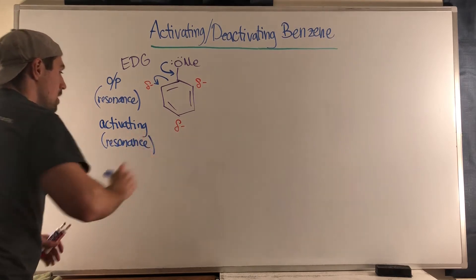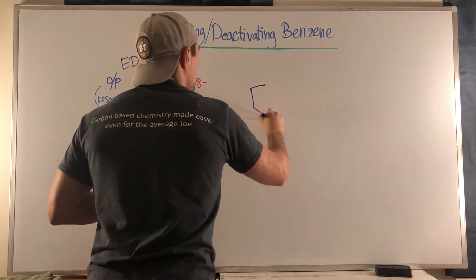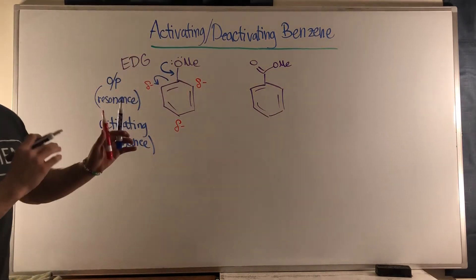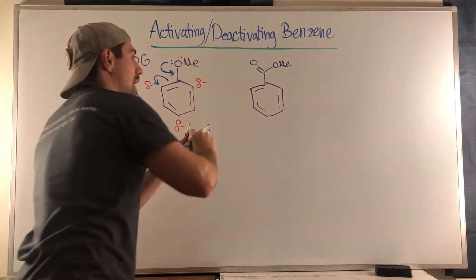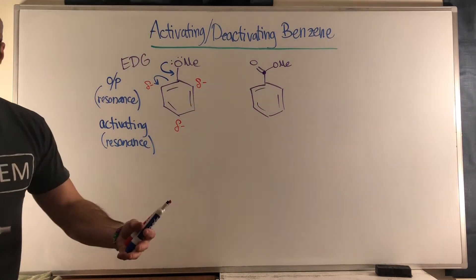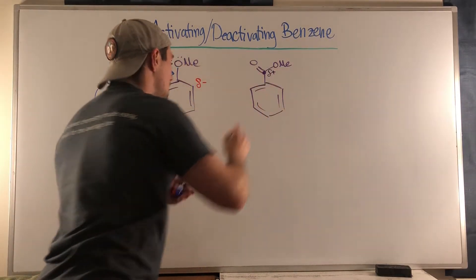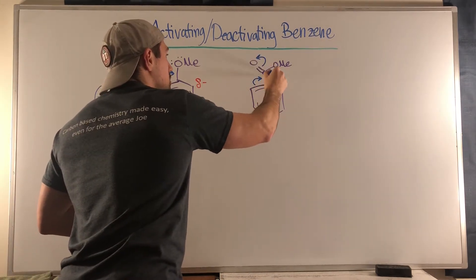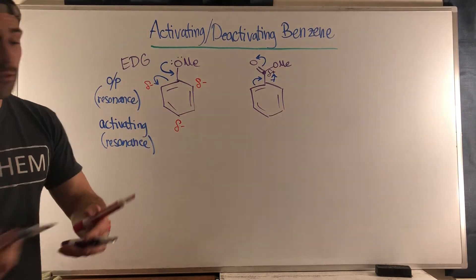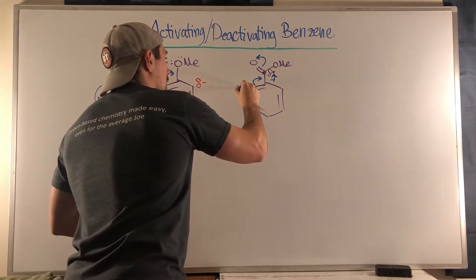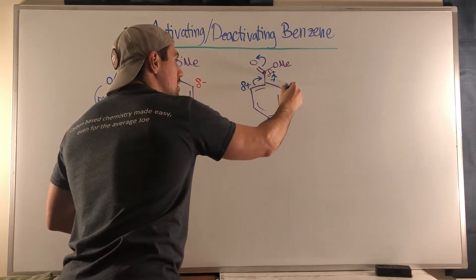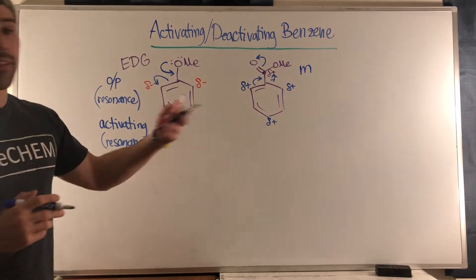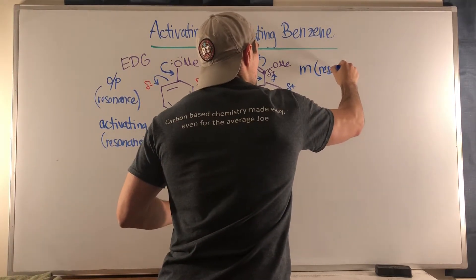Another example: if I had a carbonyl carbon directly attached to our benzene ring, it does not have electrons — it's actually partially positive itself. If we did the resonance, we would take electrons out of our benzene ring and kick them up. The resonance works its way such that we have a positive charge at the ortho and ortho and para positions, but obviously in the overall resonance hybrid they're partial charges. So we know this is a meta director, and that happens through resonance.